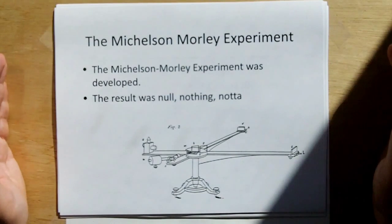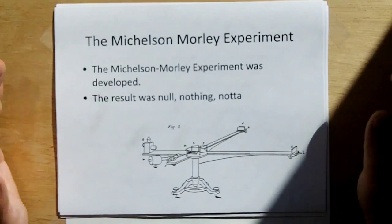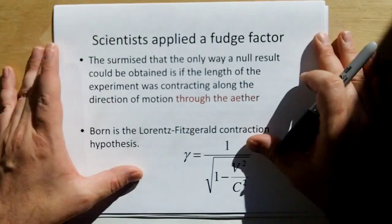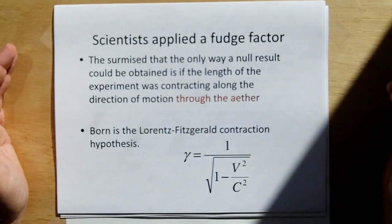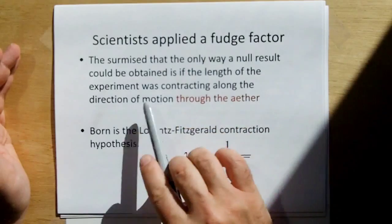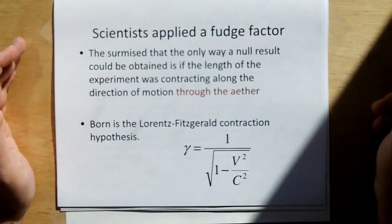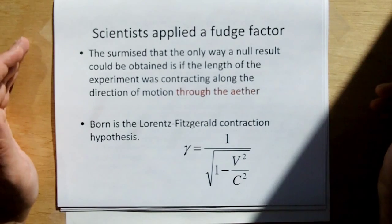In other words, if we're moving relative to aether, one arm should experience a difference in the fringe shift in the interferometry based on the other arm. Well, this is a very sensitive experiment, and it resulted in absolutely nothing. They could not detect any shift in the fringe, which means either we're not moving through aether, or there's no aether, or something else. So how did they resolve the situation? Well, they applied a fudge factor. They surmised that the only way a null result could be obtained is if the length of the experiment was contracting along the direction of the motion through the aether.